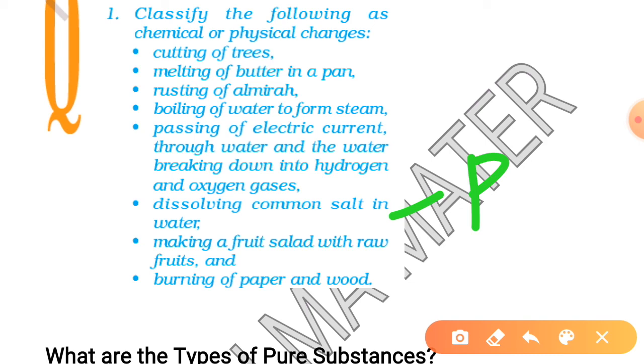Making fruit salad with raw fruits. You are just cutting, chopping the fruits. So, physical change. Burning of paper and wood. Chemical change. Because when paper or wood burns, chemical reaction will occur and heat will evolve. So, these all changes we have discussed. You can practice even more.